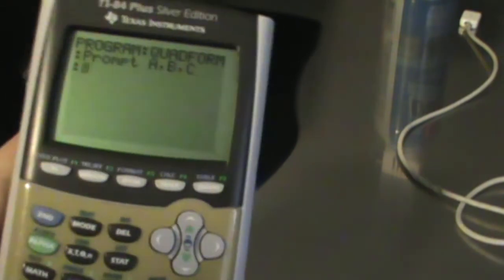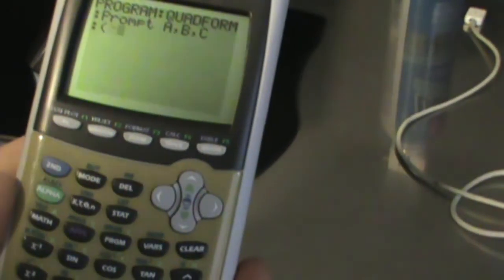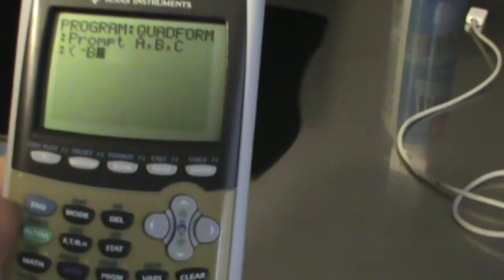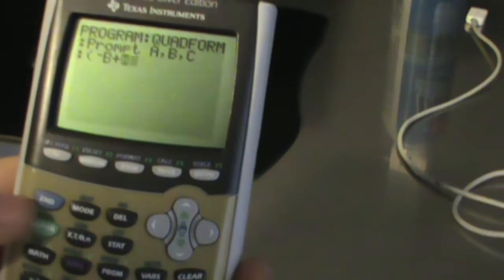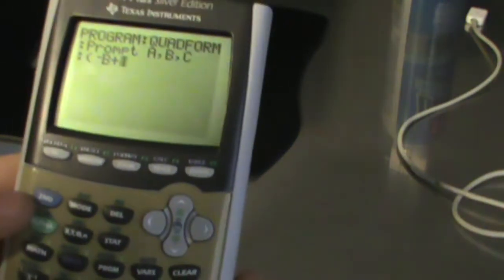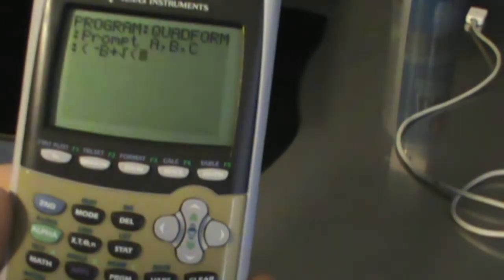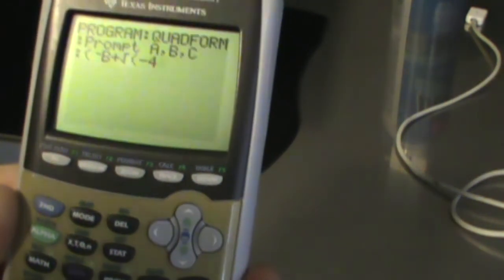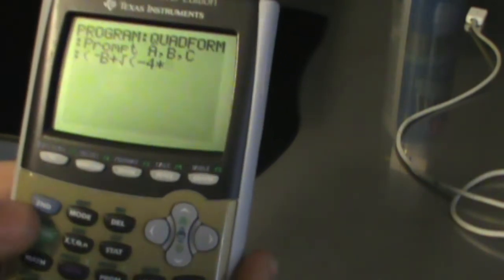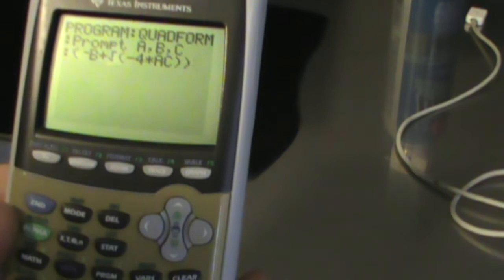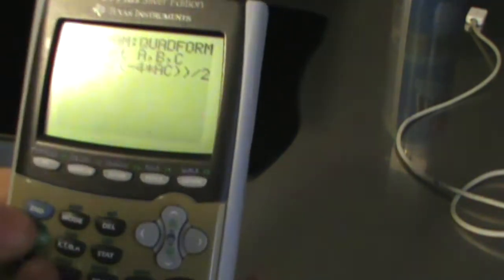Next, we're going to type in the quadratic formula. As you know, it's opposite of B, so minus B, plus square root—so plus square root of B squared minus 4 times A times C, all over 2A.